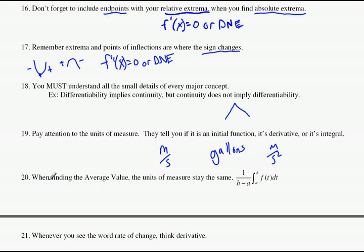Number 20. When finding the average value, the units of measure stay the same. So this is how you find the average value. Just be careful. If you're doing an average value of a rate, say it's a rate function, like miles per hour, the answer of this would be miles per hour. But if you're finding the average value of, say, meters, the answer stays in meters. A lot of people mess up.